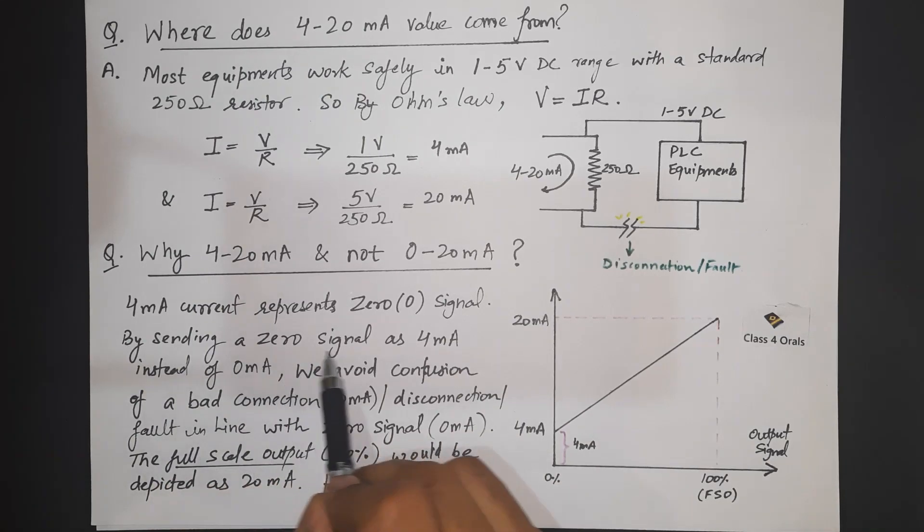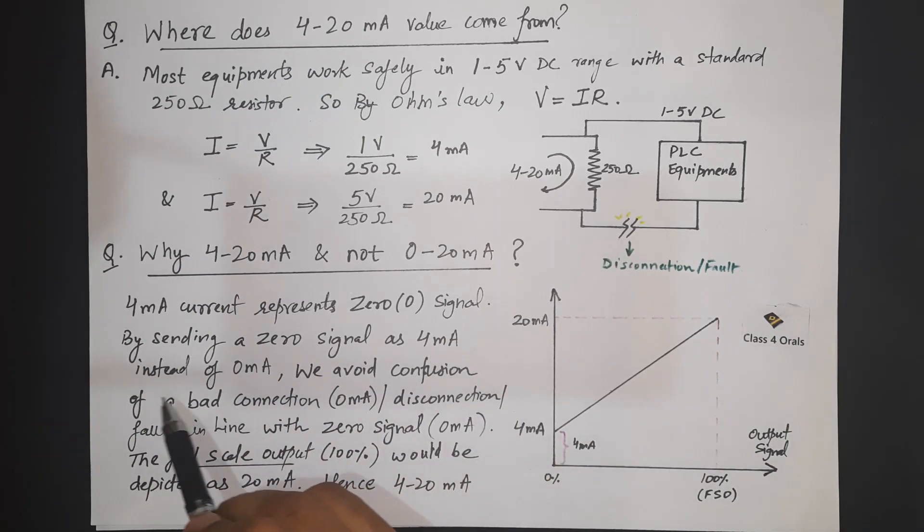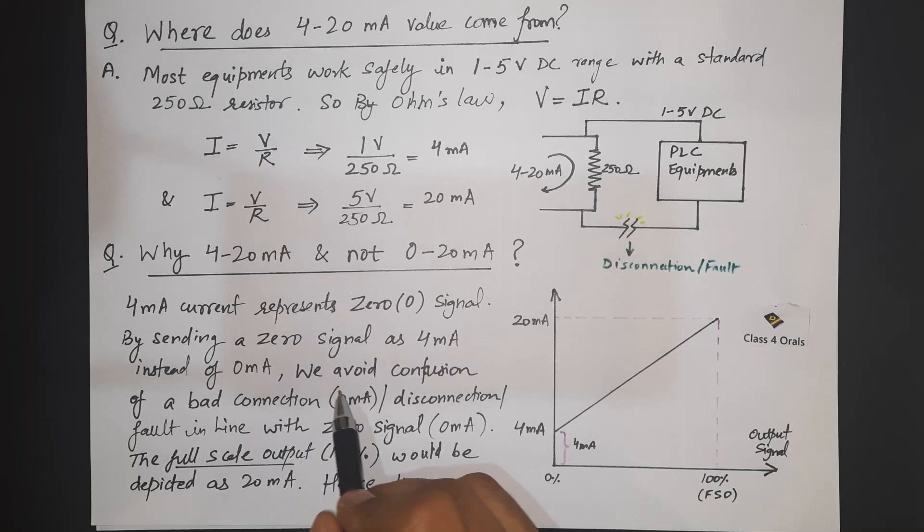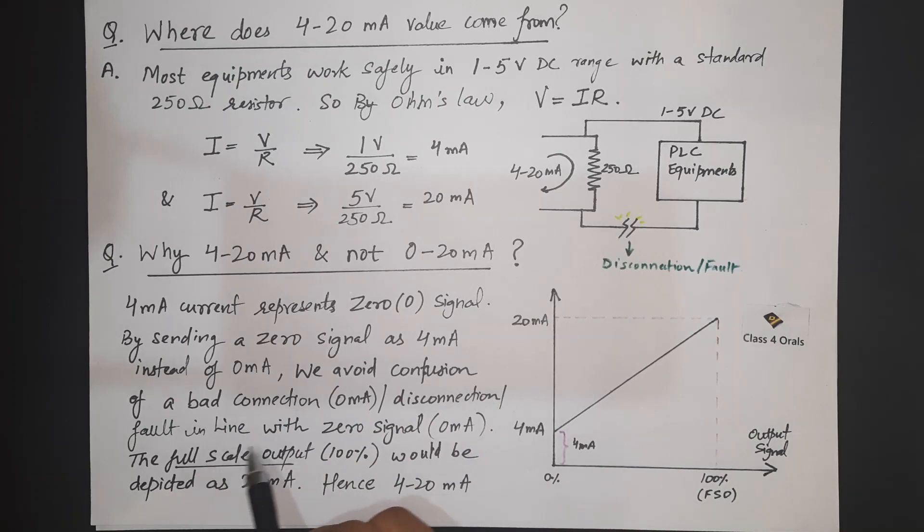Because the answer to this question is the 4 mA current represents the zero signal. By sending a zero signal as 4 mA instead of 0 mA we avoid the confusion of a bad connection.